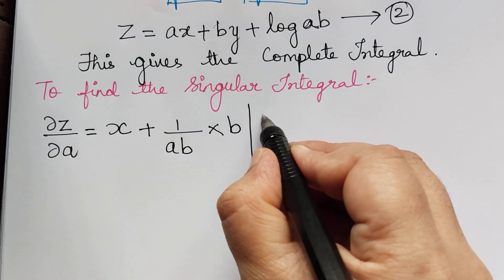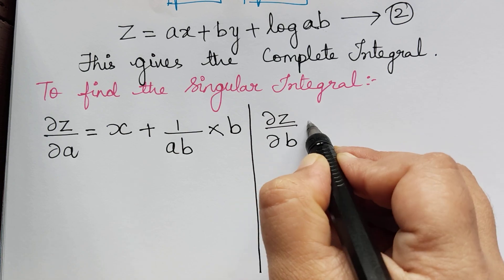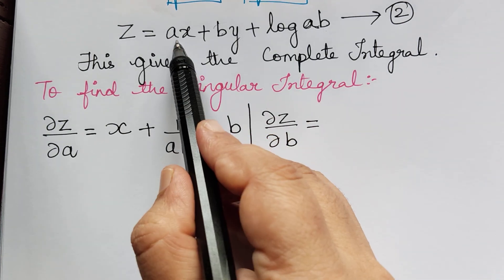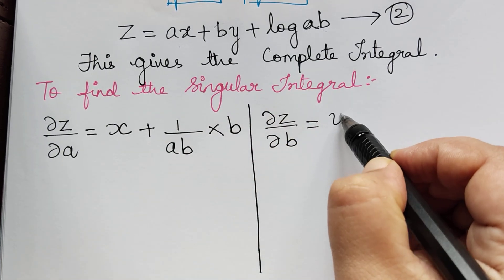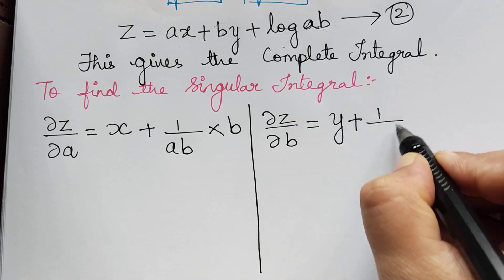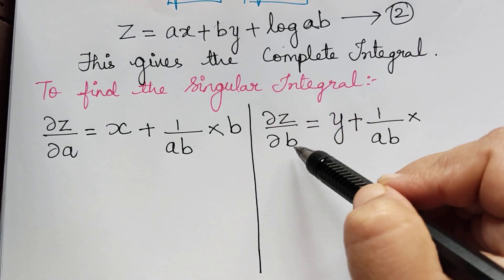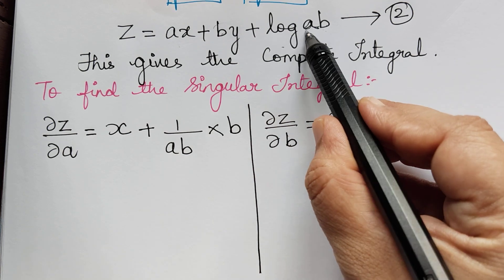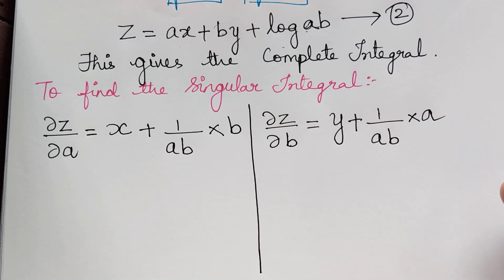In a similar manner, we differentiate z with respect to b. The term by differentiates to y, and the differentiation of log(ab) is 1/(ab) multiplied with a. Since we are differentiating with respect to b, a is treated as a constant, so a cancels and we get y + 1/b.